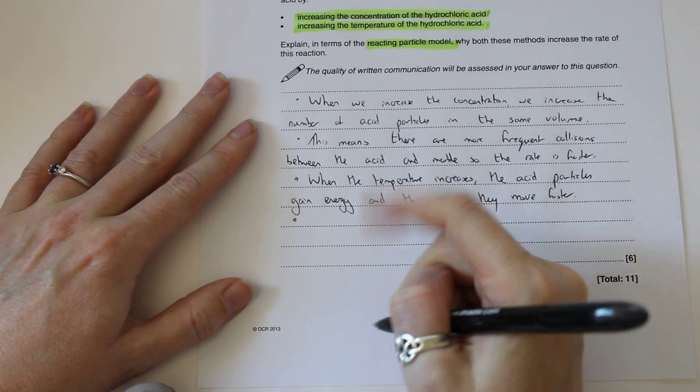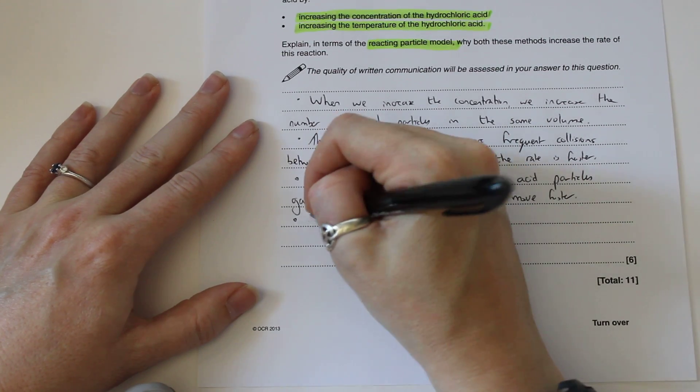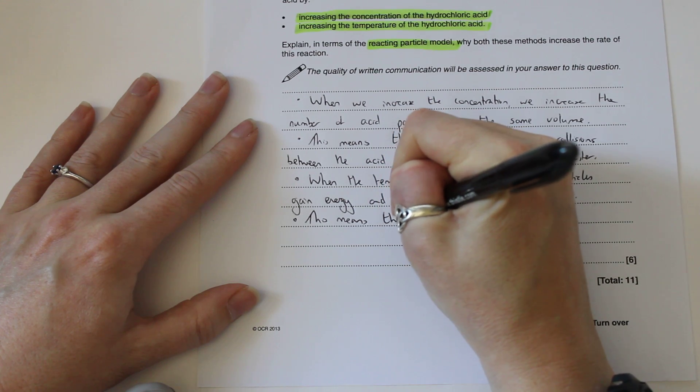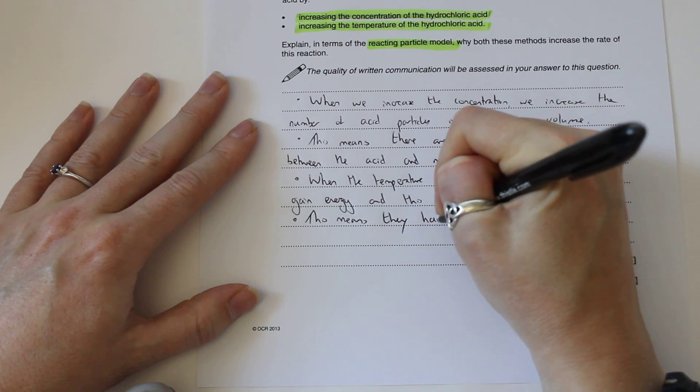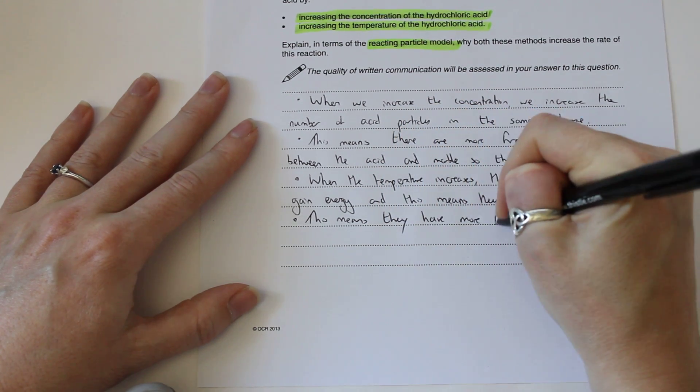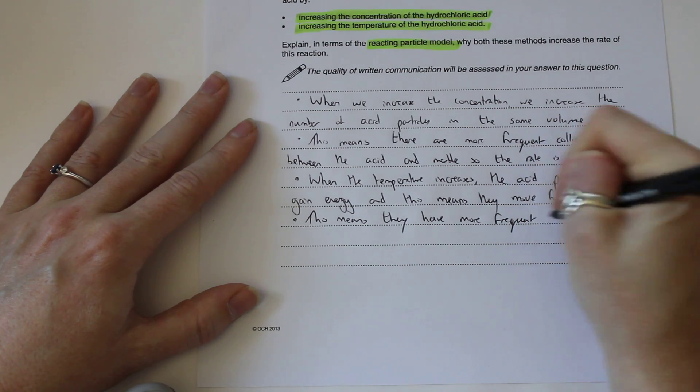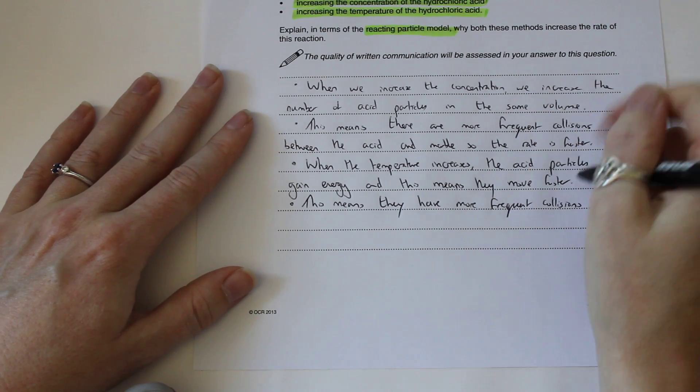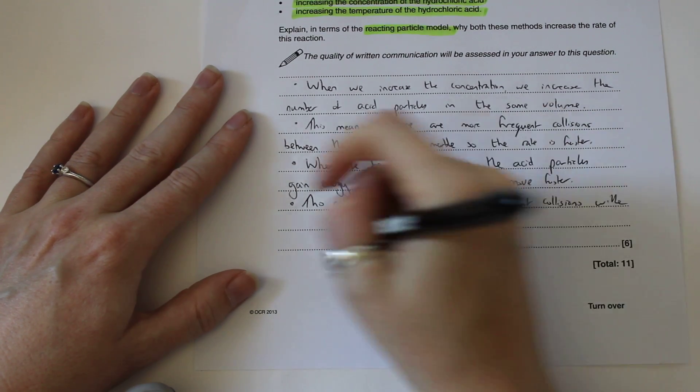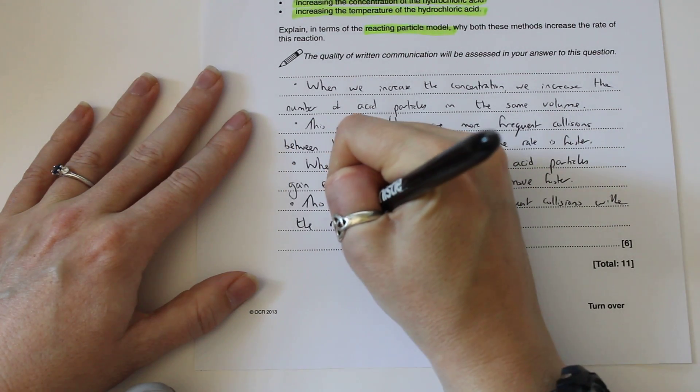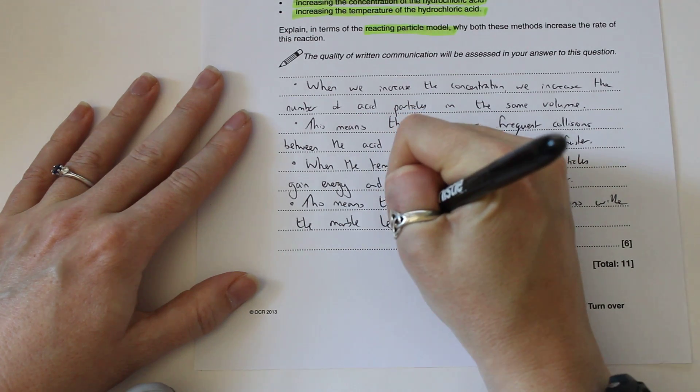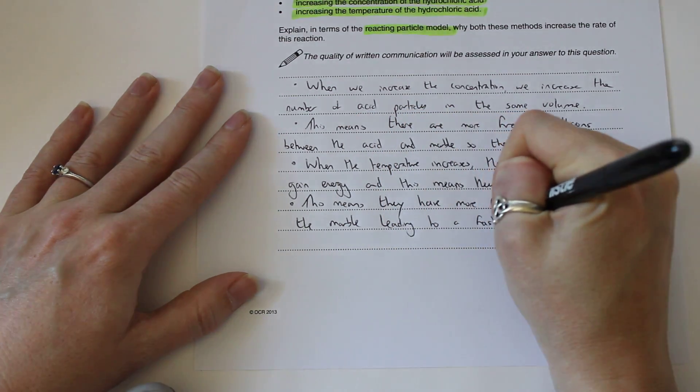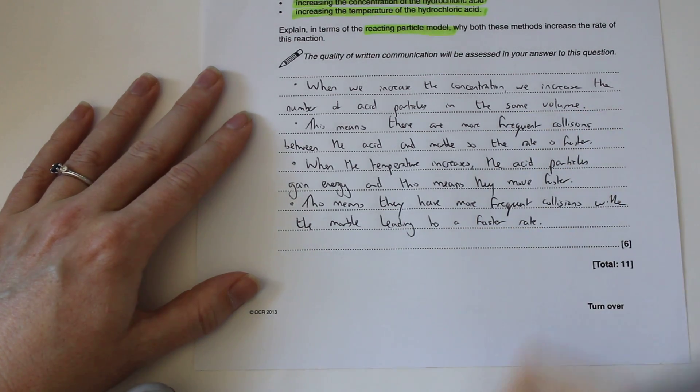And then follow that up with the explanation of how that affects the rate. So this means they have more frequent collisions with the marble leading to a faster rate.